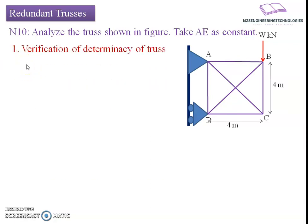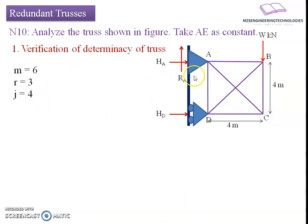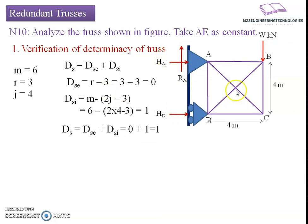To begin, we will verify whether the given truss is statically admissible or not. This step is the verification of determinacy, where we find the degree of static indeterminacy. We count the number of members: there are 6 members — AB, BC, CD, DA, AC, and BD. Number of reactive forces due to end resistance are 3: 2 at the hinge support (HA, RA) and 1 at the roller support (HD). Number of joints are 4: A, B, C, D. External indeterminacy equals unknown forces minus available equilibrium equations: 3 minus 3 equals 0, so it is statically externally determinate.